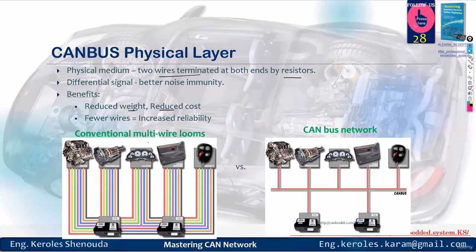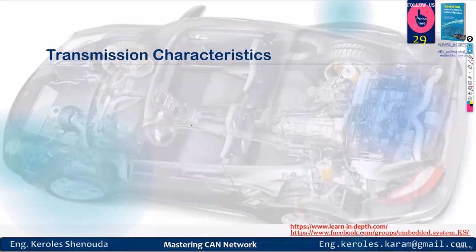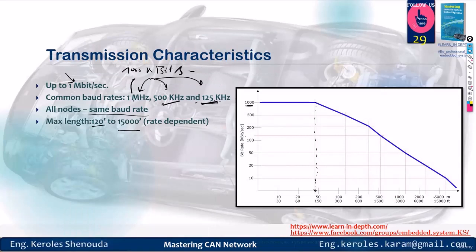The diagram on the left is without the CAN bus, and the one on the right shows how it appears when implemented. The transmission characteristics can reach one megabit per second. Its baud rates are either 125 kHz, 500 kHz, or 1 MHz — so you might find 1 MHz written in the datasheet as 1000 kHz.